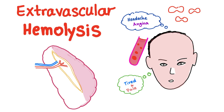Usually systolic, because diastolic murmurs are always abnormal. So what is extravascular? Extravascular literally means outside the vessel — not only the spleen, but other organs as well. When you hear extravascular hemolysis, it means it occurs in those organs, versus intravascular hemolysis, which occurs inside the blood vessel.